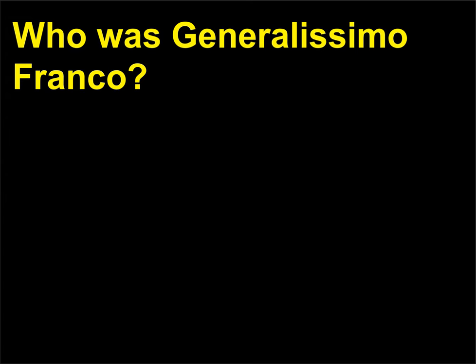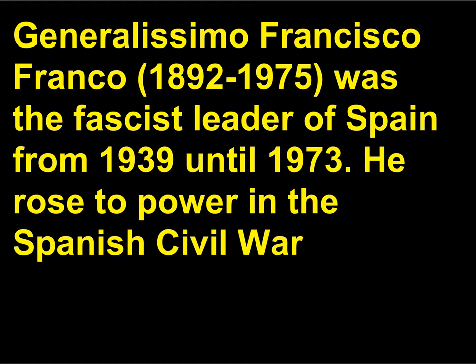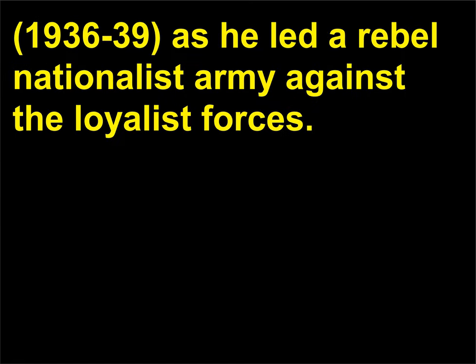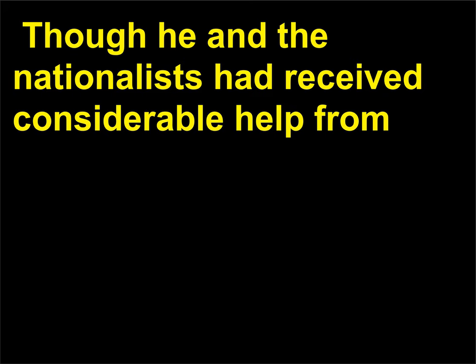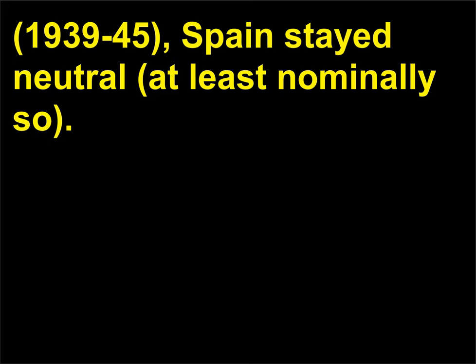Who was Generalissimo Franco? Generalissimo Francisco Franco, 1892–1975, was the fascist leader of Spain from 1939 until 1973. He rose to power in the Spanish Civil War, 1936–39, as he led a rebel nationalist army against the loyalist forces, capturing Madrid in 1939 and assuming the role of head of government. Though he and the nationalists had received considerable help from Nazi Germany and fascist Italy to win the Civil War, when fighting broke out in World War II, 1939–45, Spain stayed neutral, at least nominally so.